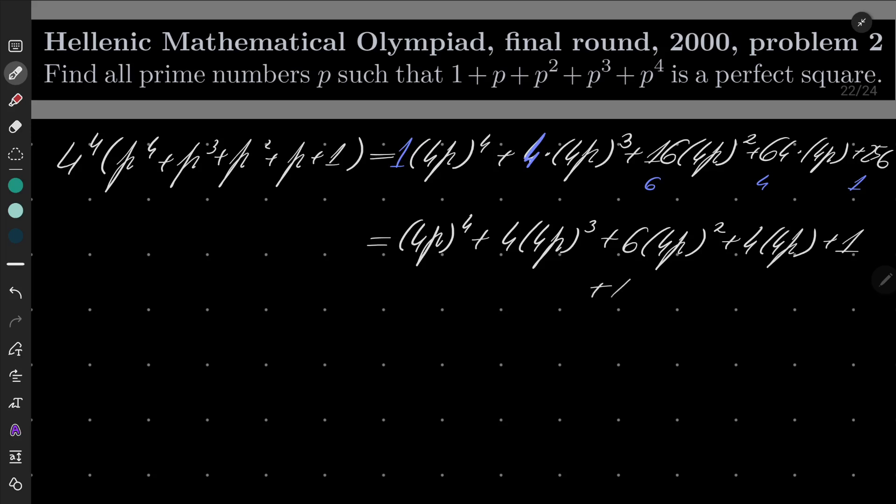I had 16, so I had to add plus 10. Here I had 64, so I have to add 60 and I have to add 255.